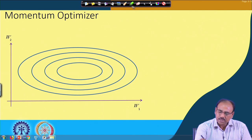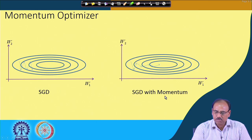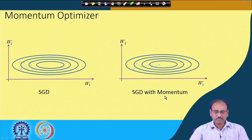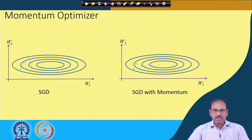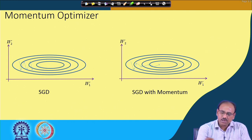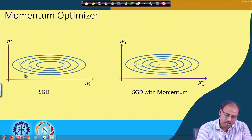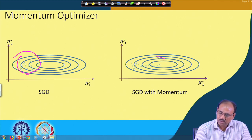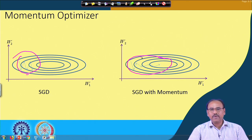Comparing gradient descent with and without the momentum term side by side, you find that the weight update sequence without momentum shows large oscillating steps, whereas with the momentum term the weight update sequence moves much more smoothly and directly toward the minimum. This makes the stochastic gradient descent algorithm much more efficient.